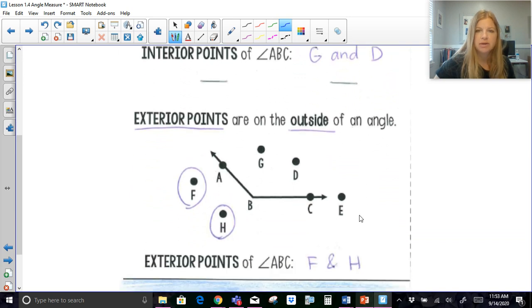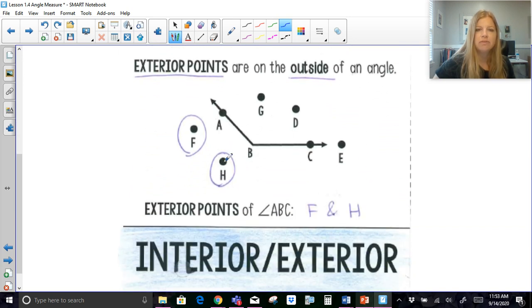Whereas exterior, if points are on the exterior of an angle, they're not within this kind of door hinge. Imagine this is a wall and this is a door. They're not within the hinge. They're on the outside. So points F and H would be on the exterior. If this is where my angle is, then these are on the interior, and any points that would not be within that angle measure are here.